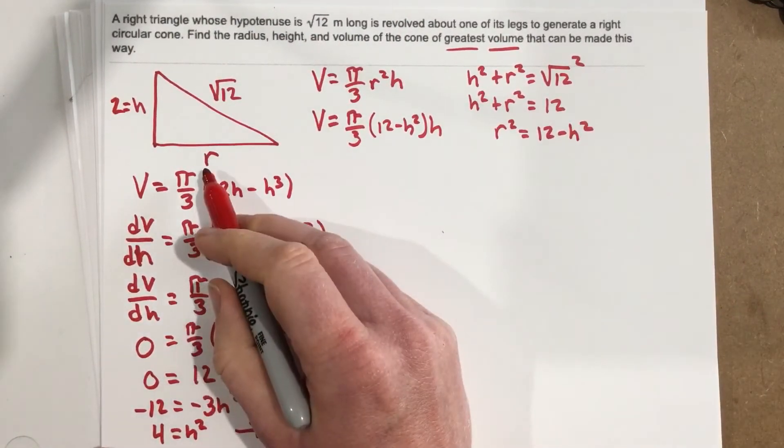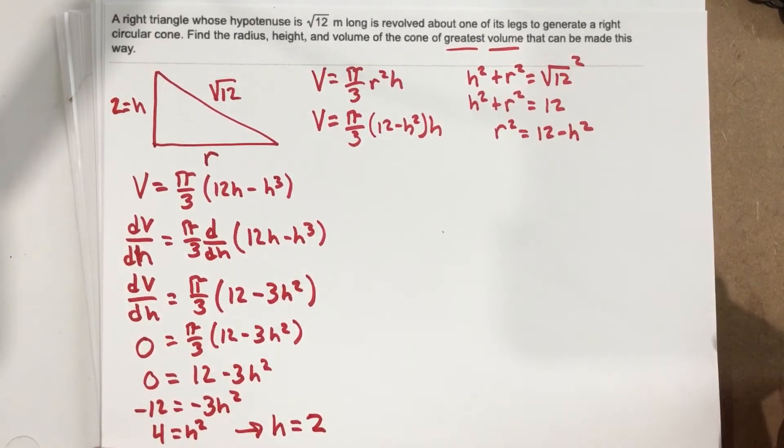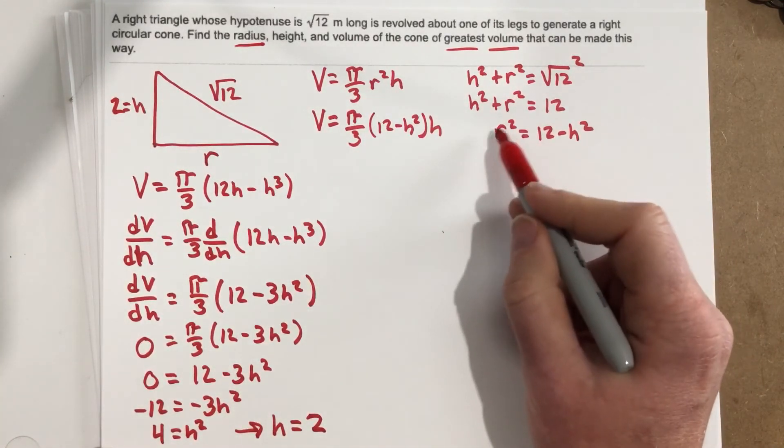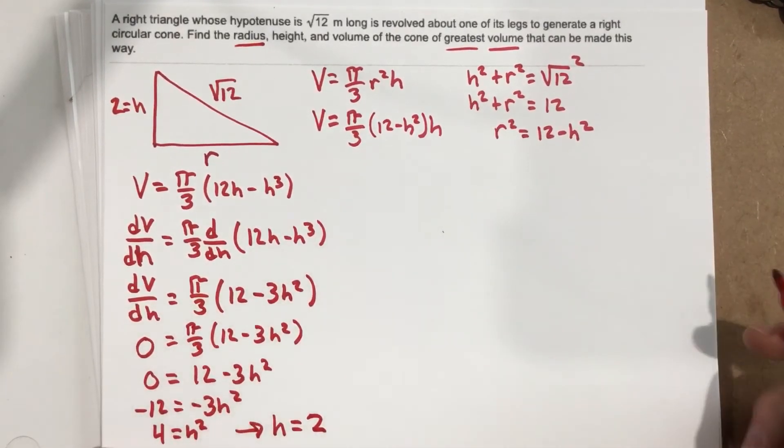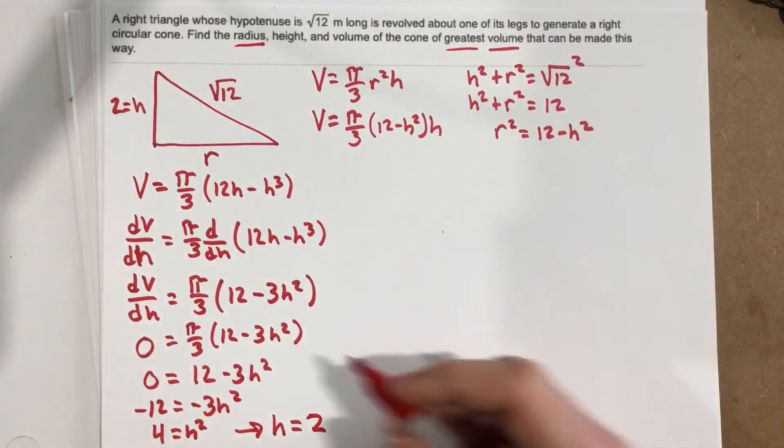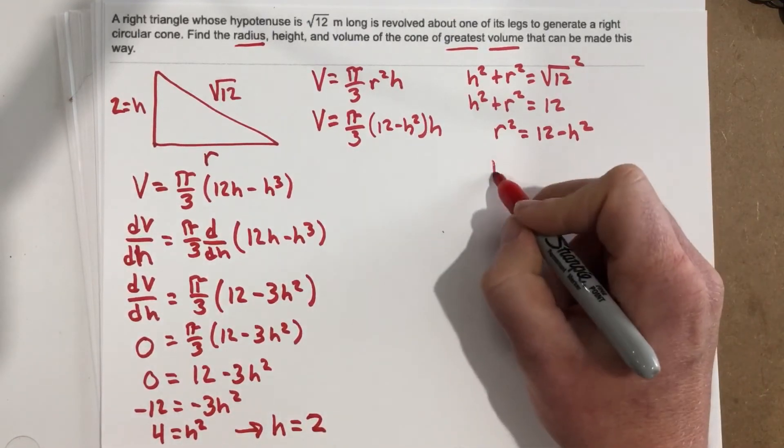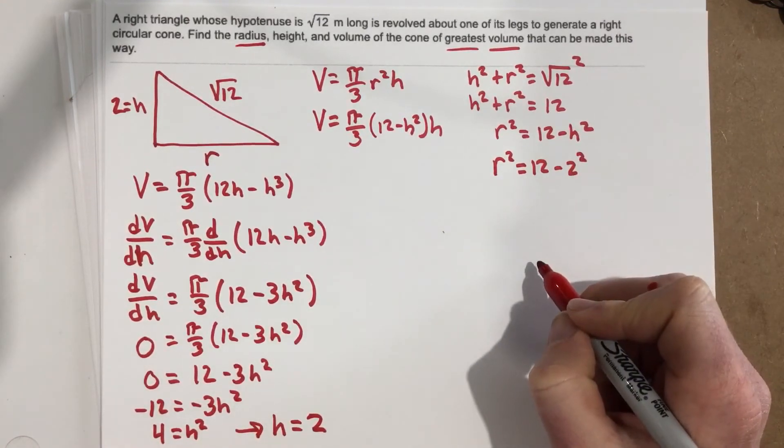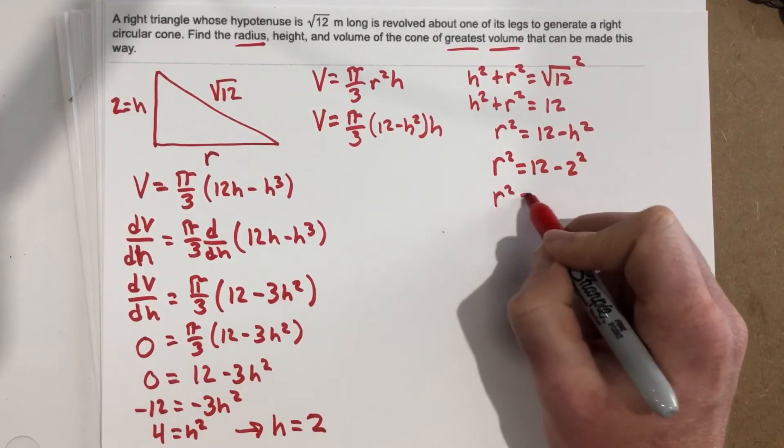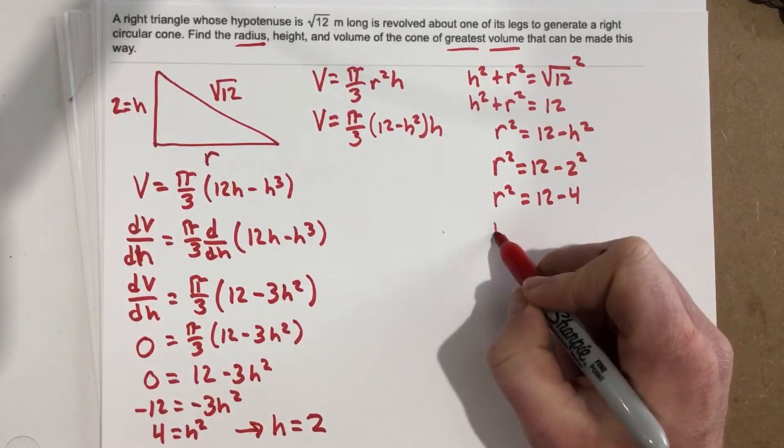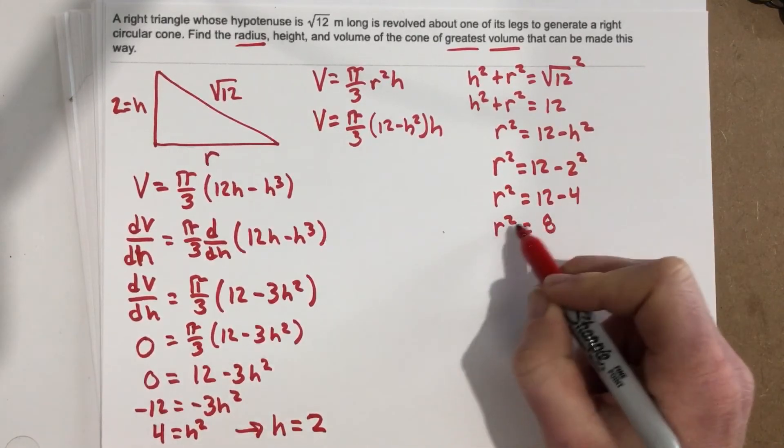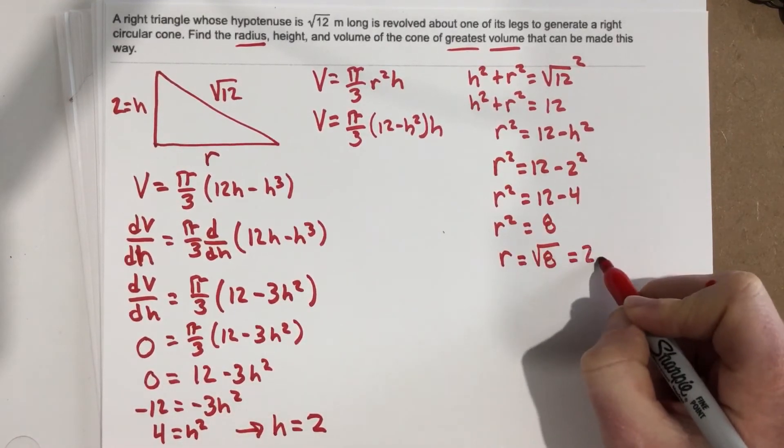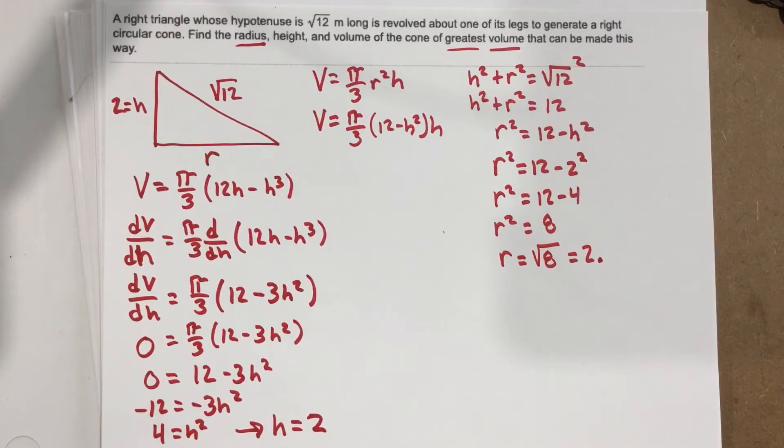Well, what's r then? Technically, they want us to find the radius, so we do need r. Let's plug into here: r² = 12 - 2² = 12 - 4, so r² = 8. We do the root of that and we get r = √8, which is 2 point... let's put that in the calculator.